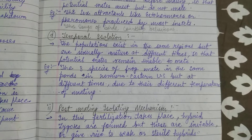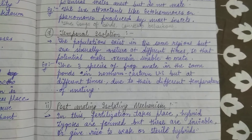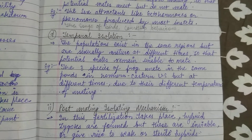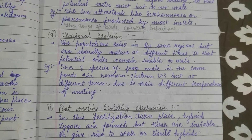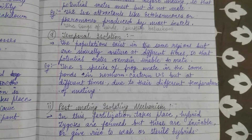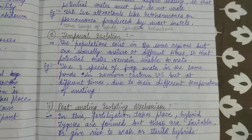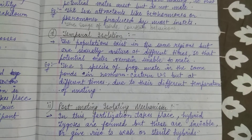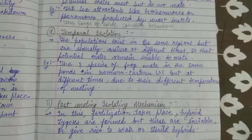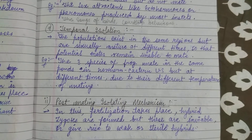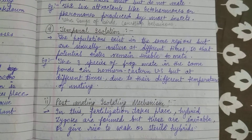In temporal or seasonal isolation, different seasons cause reproductive organs to develop at different times, so they cannot mate simultaneously. For example, three species of frogs mate in the same ponds in northeastern US but at different times due to different temperature requirements for mating.